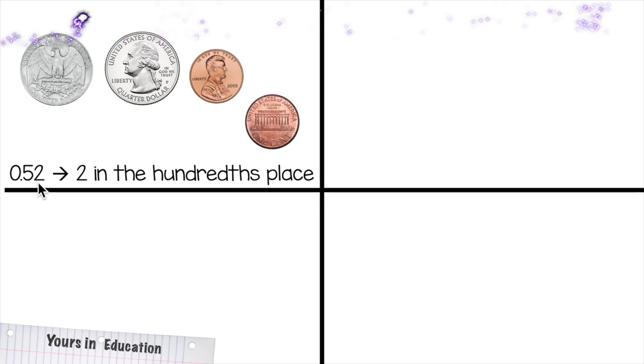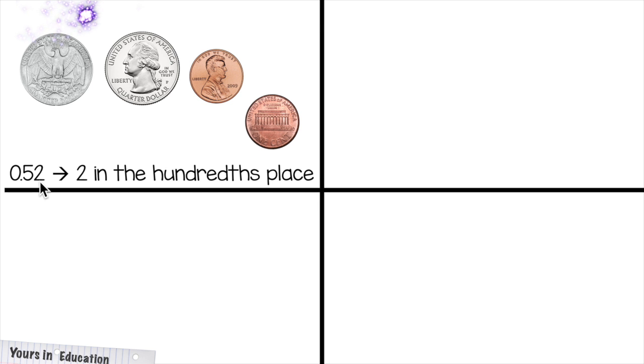The hundredths place is this one. We have the ones, tenths, and hundredths. And we're gonna count 25, 50, 51, 52 cents. You write 0.52, and the 2 is in the hundredths place.